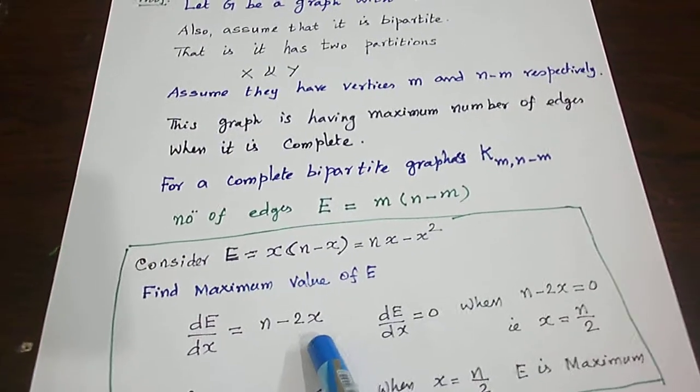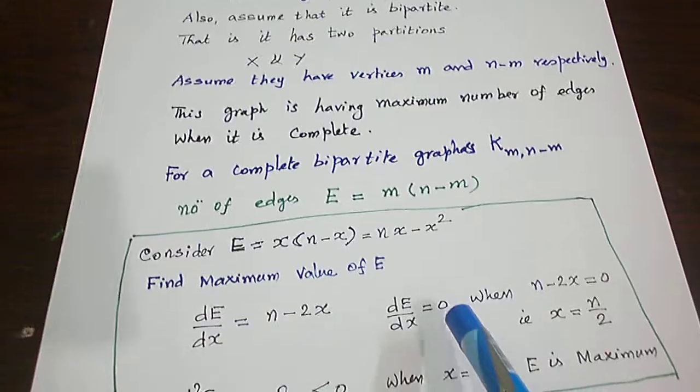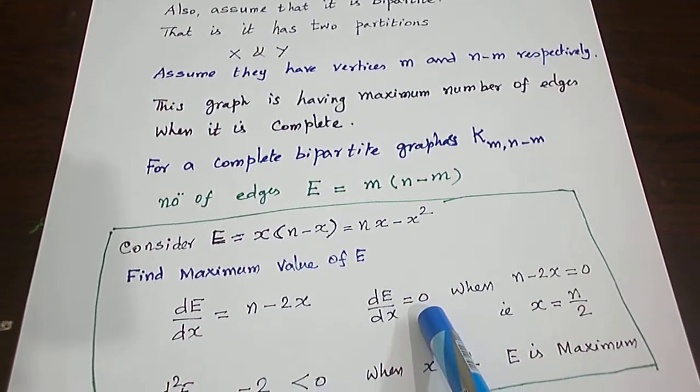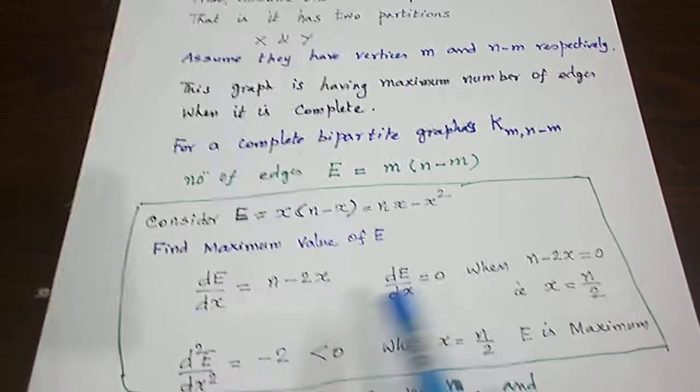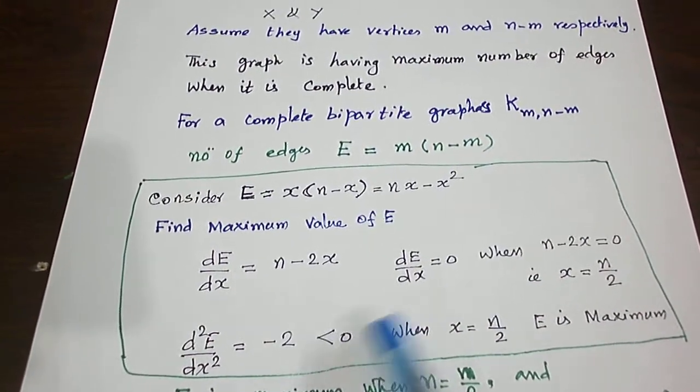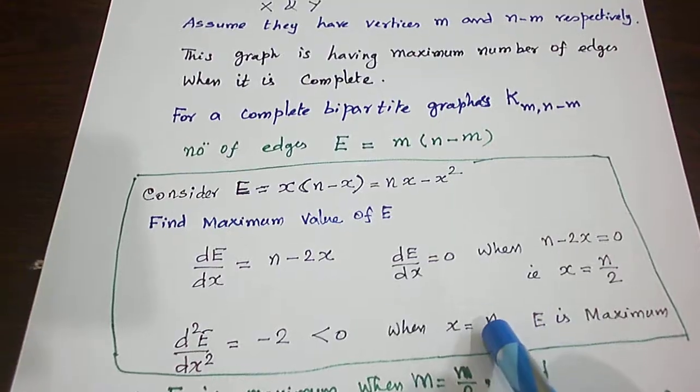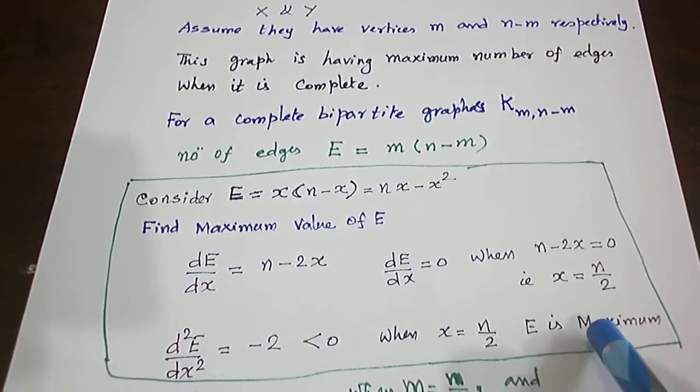First order differentiation gives n minus 2x. Setting it to 0, we get x equals n by 2. The second order differentiation is minus 2, which is negative. So at x equals n by 2, this value is maximum.